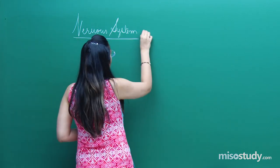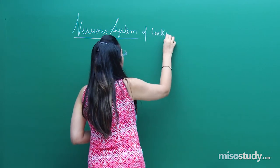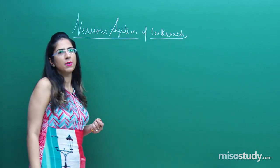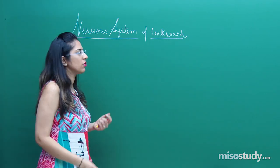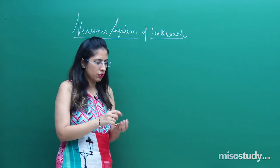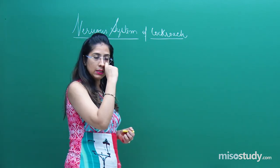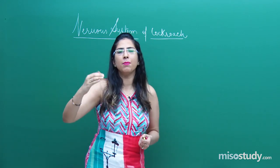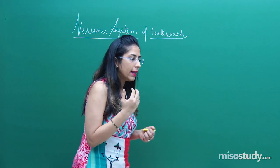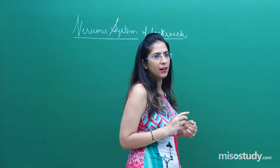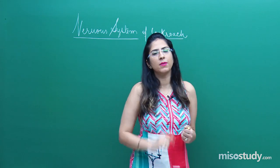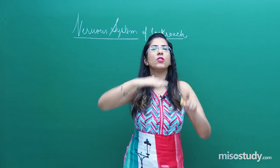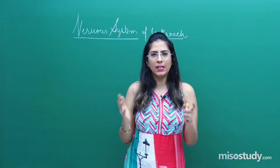Nervous system of cockroach. We will not be going into detail — only a brief account is mentioned in your syllabus. The nervous system is basically composed of segmentally arranged ganglia. A pair of these ganglia are present in each segment, and there are 9 such ganglia — 3 in the thorax region and 6 in the abdominal region. These ganglia are connected with the help of a longitudinal commissure.